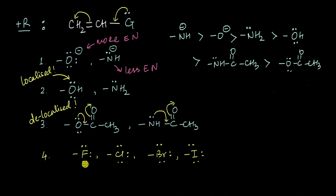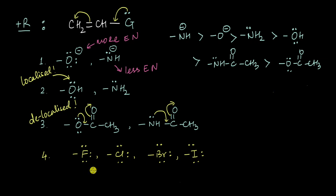If we had to compare the plus-R effects of the halogens, we might say that as we go down the group from fluorine to iodine, electronegativity decreases — fluorine is most electronegative, followed by chlorine, bromine, and iodine. So the electron donation from iodine should be easiest, meaning the plus-R effect of F < Cl < Br < I. However, it turns out that this order is actually incorrect.